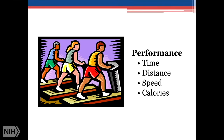Another example: treadmills. For a statistician, you have numbers flashing all over the place — how fast you're going, how long you've been going, how far you've been going, how many calories you've burned. So among the questions we have to ask is: which one do we care about? Do we care about all of them? Or is there one that's more important that's really going to answer the question we have?